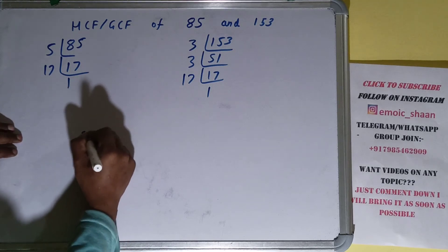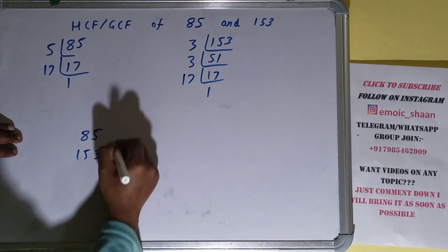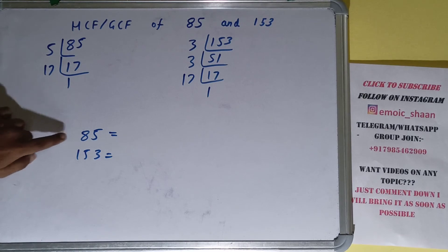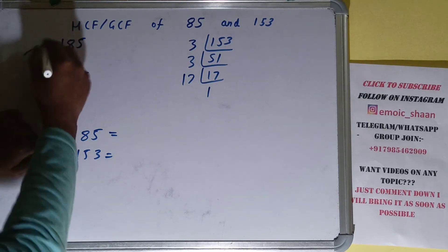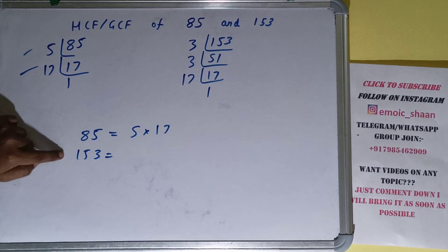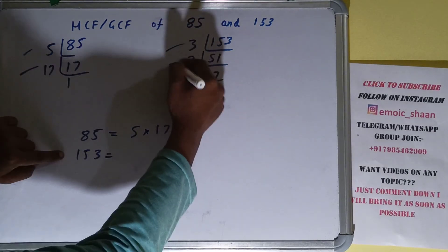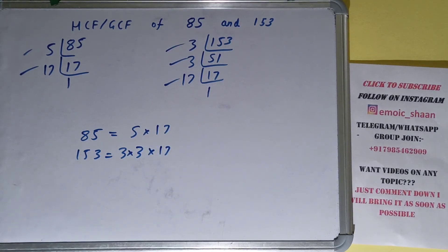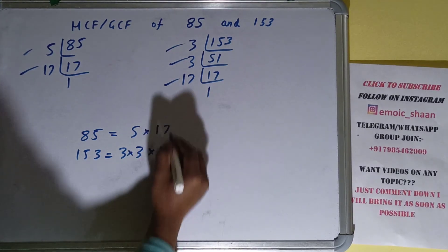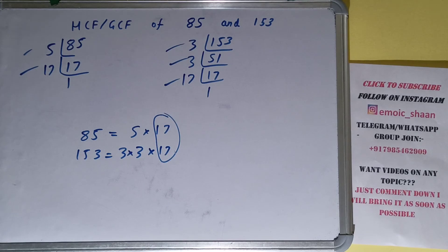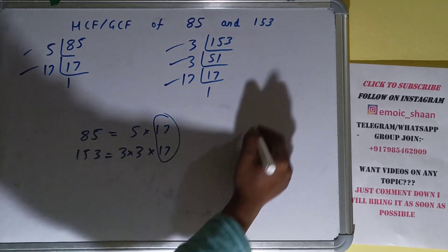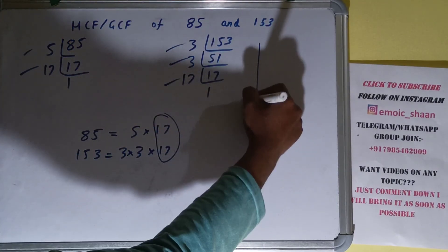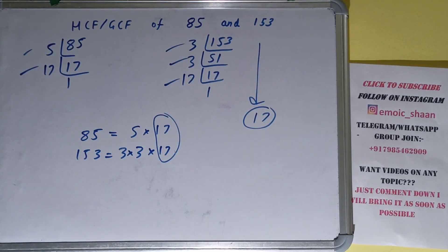The next thing we need to do is write down each number with their respective prime factors. For 85, the prime factors are 5 and 17. For 153, the prime factors are 3, 3, and 17. Then we circle out the common prime factors. We only have one common prime factor, which is 17. So the HCF or GCF of 85 and 153 is 17.